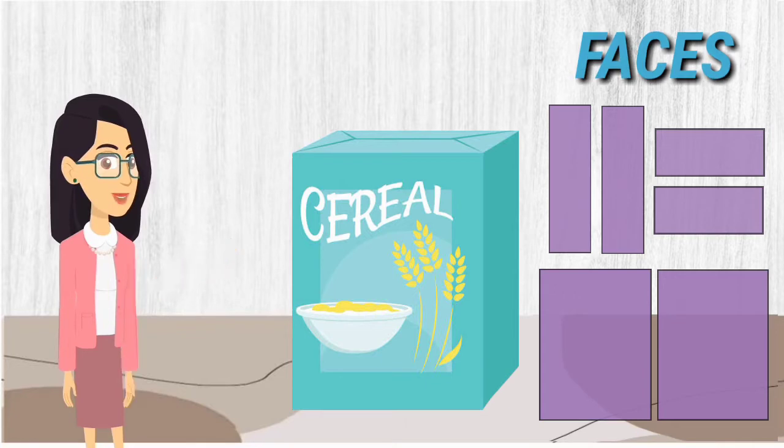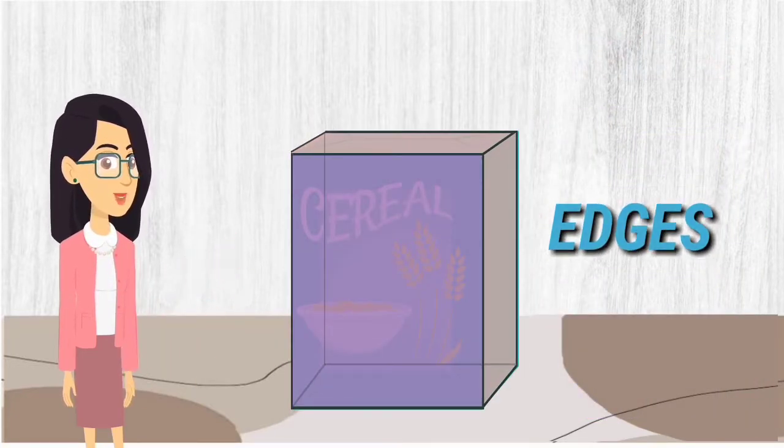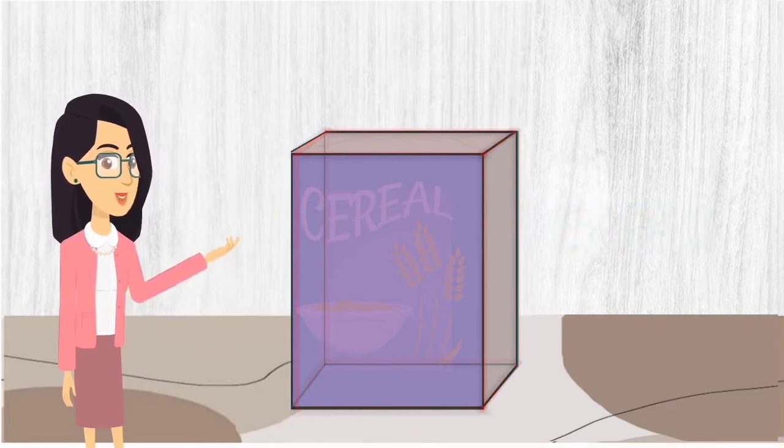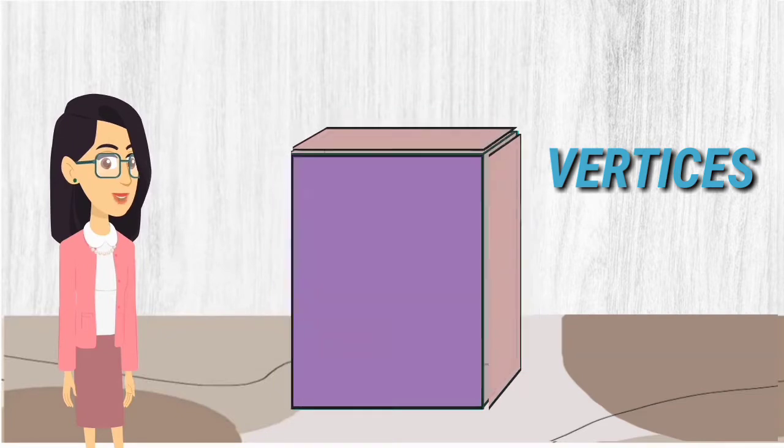The bases are the polygons that make up the polyhedron. The edges are the sides of the faces, and the vertices are the points where three or more faces meet.